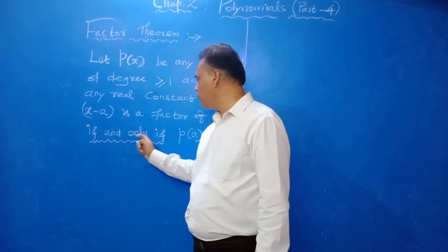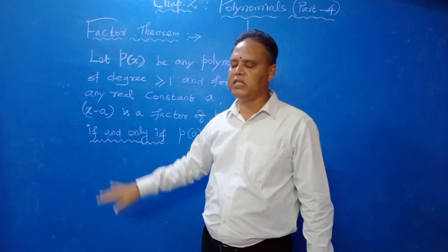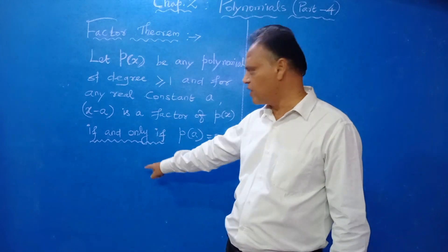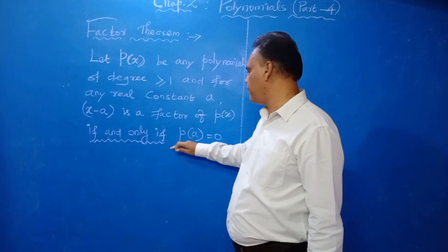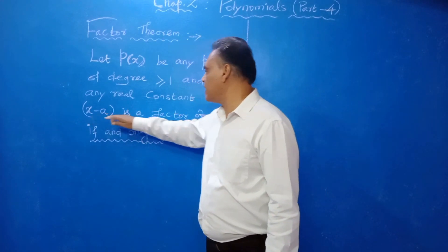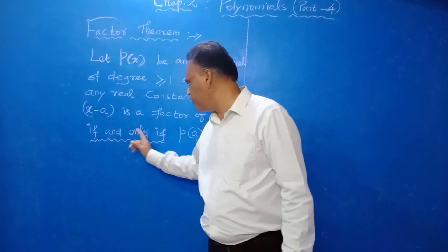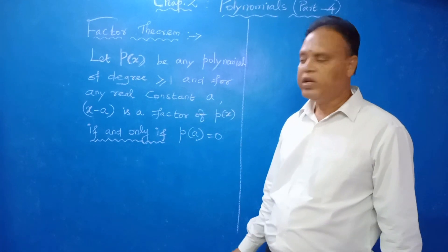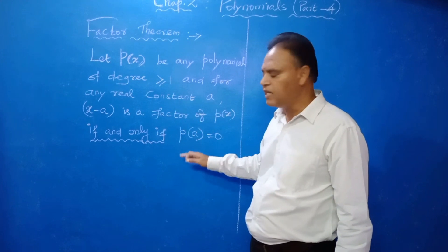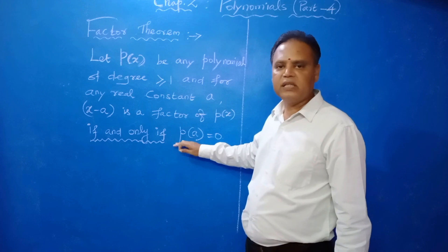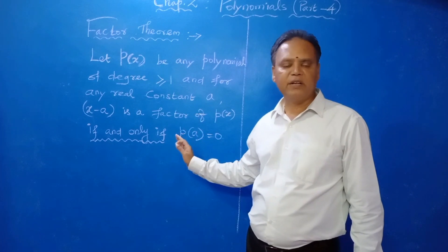The phrase 'if and only if' means both ways it is true — conversely, reversely also it is true. So X minus A is a factor of P of X means we can write P of A equal to 0, and P of A equal to 0 means we can say X minus A is a factor of P of X. This is the factor theorem, and using it we can solve problems.